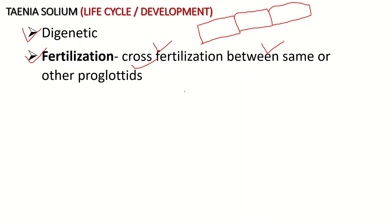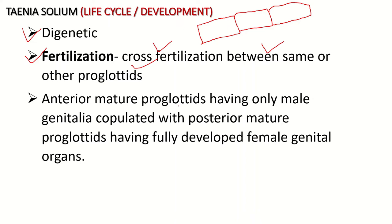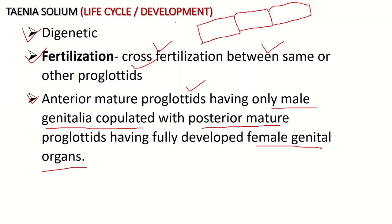When the common gonopore of two mature proglottids comes in contact, folding occurs. The anterior mature proglottids have only male genital copulatory organs, while the posterior mature proglottids have fully developed female genital organs. Due to the folding of these proglottids, cross-fertilization takes place.